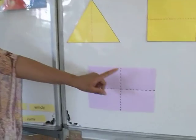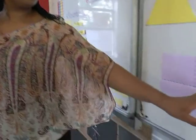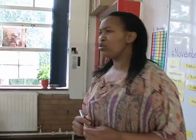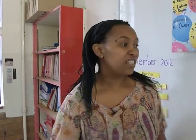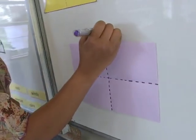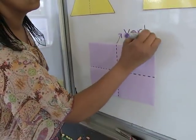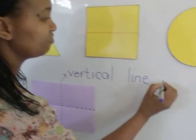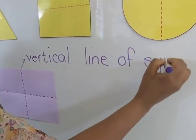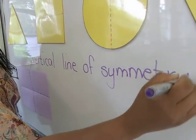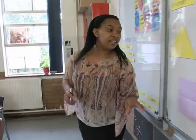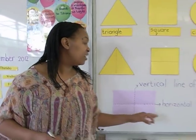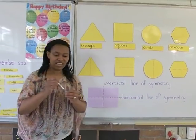If you look at the lines, one is drawn from top to bottom and the other is drawn from left to right. There's a special word for a line drawn from top to bottom — vertical. It's called a vertical line. And what do we call the line drawn from left to right? Horizontal. A rectangle has a vertical line of symmetry and a horizontal line of symmetry.